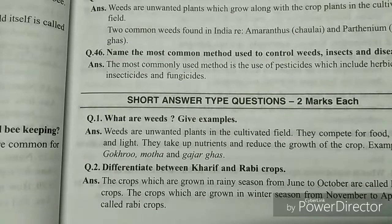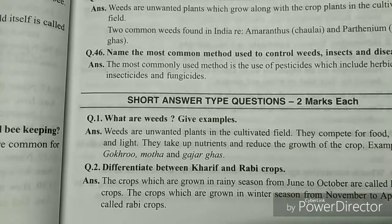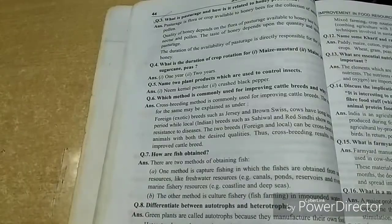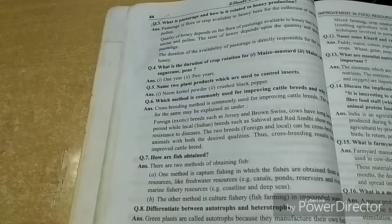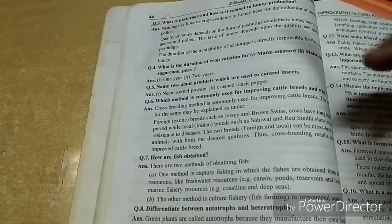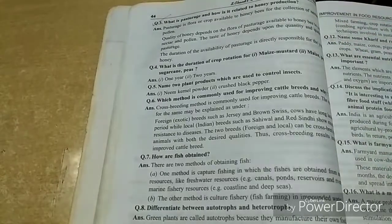Now let's look at two-mark short questions. The second question — differentiate between kharif and rabi crops — you should know their examples as well. A very important short question is the third one: What is festuca and how is it related to honey production? It's very very important and generally asked in the exam.